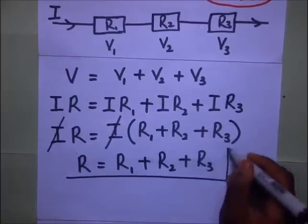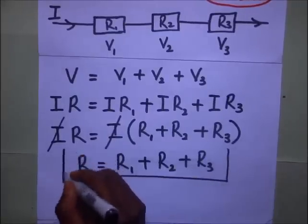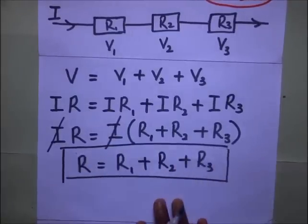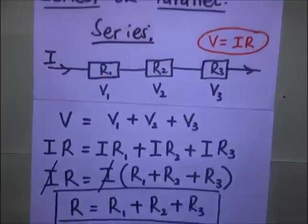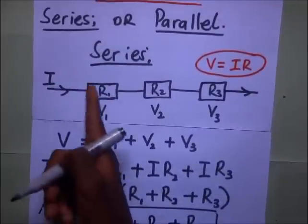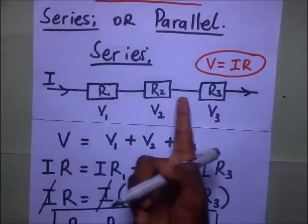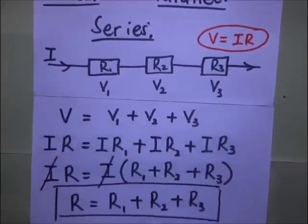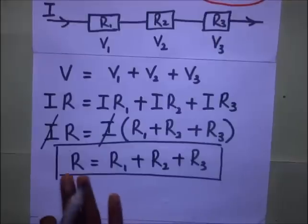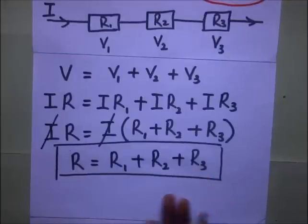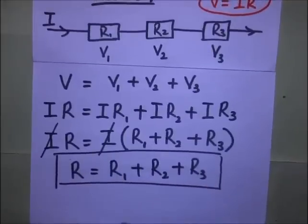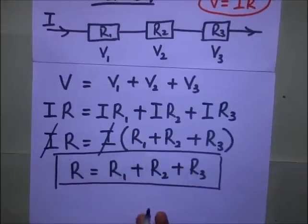So the effective resistance of resistors in series equals R1 plus R2 plus R3. This becomes our formula for finding the effective resistance of any number of resistors in series — whether three, four, or five — you simply add up all their resistances. This is the formula for resistors in series.